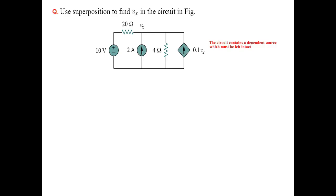Another example. In this example we have a dependent source, so how do we solve this? Remember we mentioned earlier that a circuit containing a dependent source must be left intact. So we will not touch or transform the dependent source — we will only transform the independent sources.